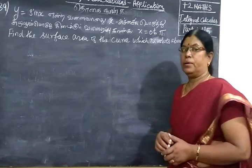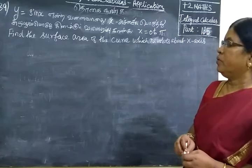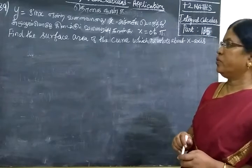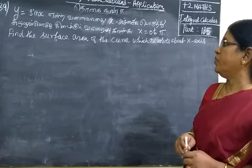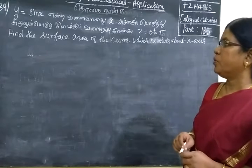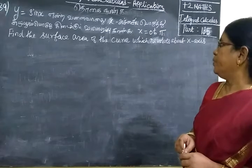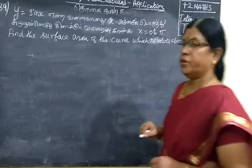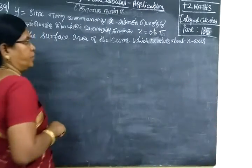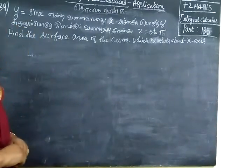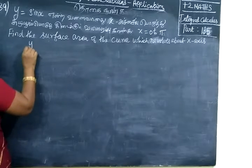We have a question: Part 135. Given y = sin(x), what is the limit from 0 to π? We want to find the surface area of the curve about the x-axis.